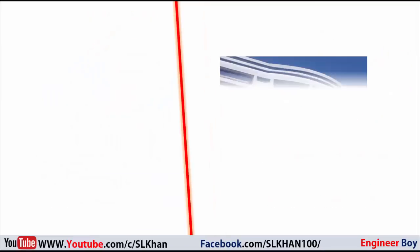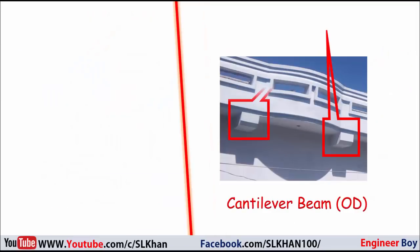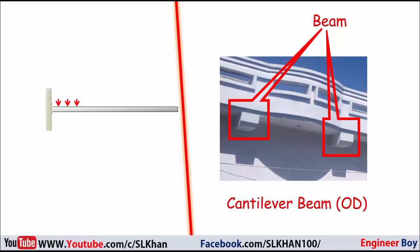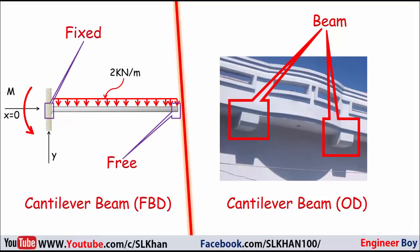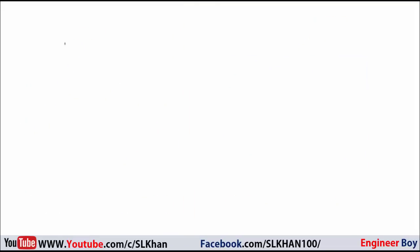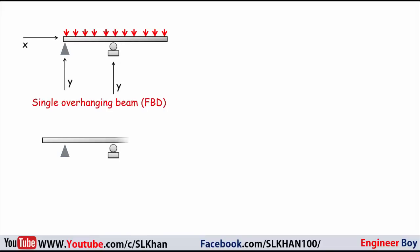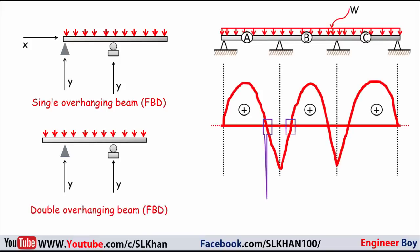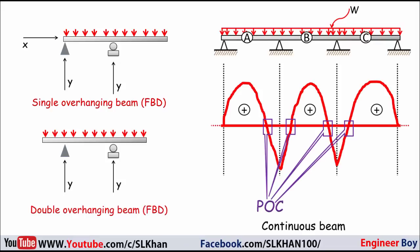A beam fixed at one end and projecting into space is called a cantilever beam. These types of beams are determinate because they have reactions only at the fixed support, which are just a moment and a vertical reaction. Sometimes one or both ends of a beam are extended beyond its supports, and because of this extension the beam is known as an overhanging beam. Both overhanging beams and cantilever beams can have a point of contraflexure where the bending moment changes its sign.